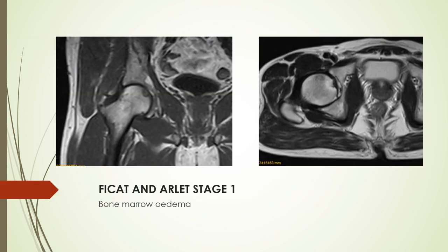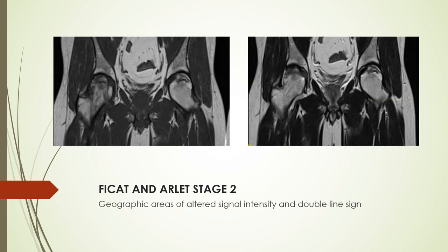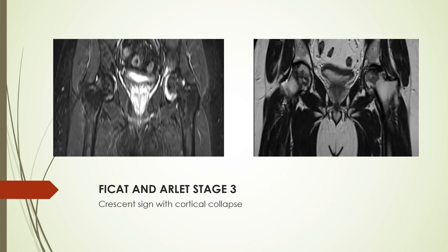In stage 1, there is bone marrow edema as we can see in this T1 coronal and T2 axial image. In stage 2, there are geographic areas of altered signal intensity and double line sign. In the left femoral head, we can see the double line sign in these T1 and T2 coronal images. In the right femoral head, we can see geographic areas of altered signal intensity with cortical collapse, where it has progressed to stage 3. In stage 3, there is a crescent sign with cortical collapse, as seen in this coronal STIR and T2 sequence in both femoral heads.